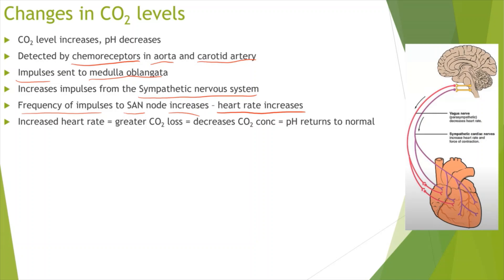Because of that increased heart rate, there is greater CO2 loss and a decreased CO2 concentration in the blood. The increased heart rate means more blood is pumped out of the heart, so more CO2 is lost, the CO2 concentration decreases, and the pH returns to normal — conditions are no longer acidic.